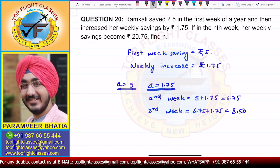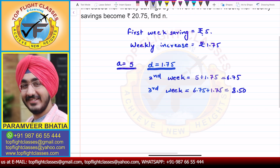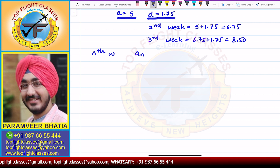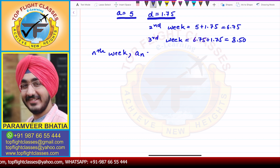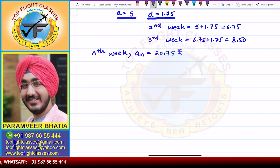Now, the weekly savings become Rs 20.75 at some stage, and we have to find n. The formula is: a plus (n minus 1) times d equals 20.75. So we have 5 plus (n minus 1) times 1.75 equals 20.75.